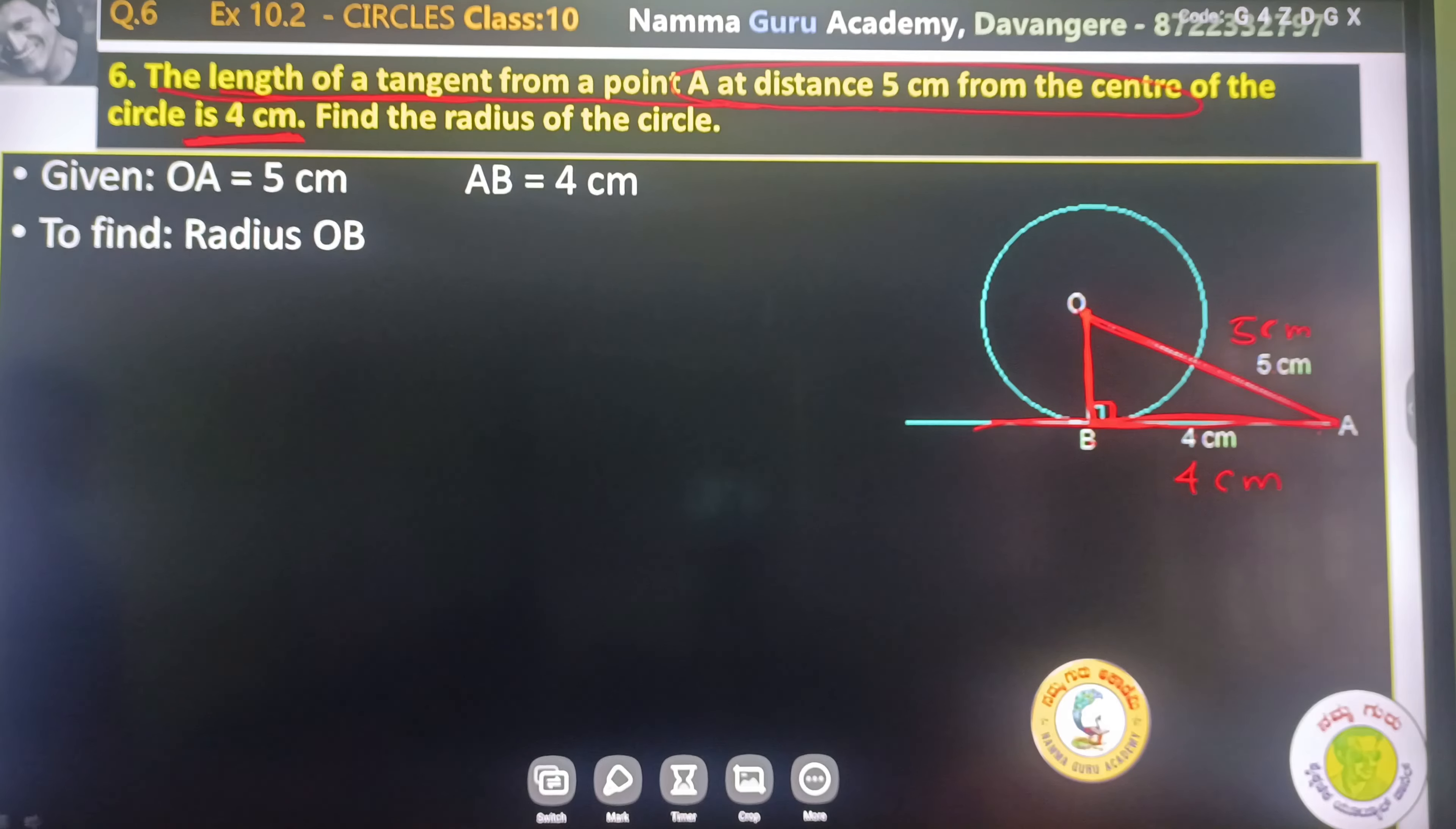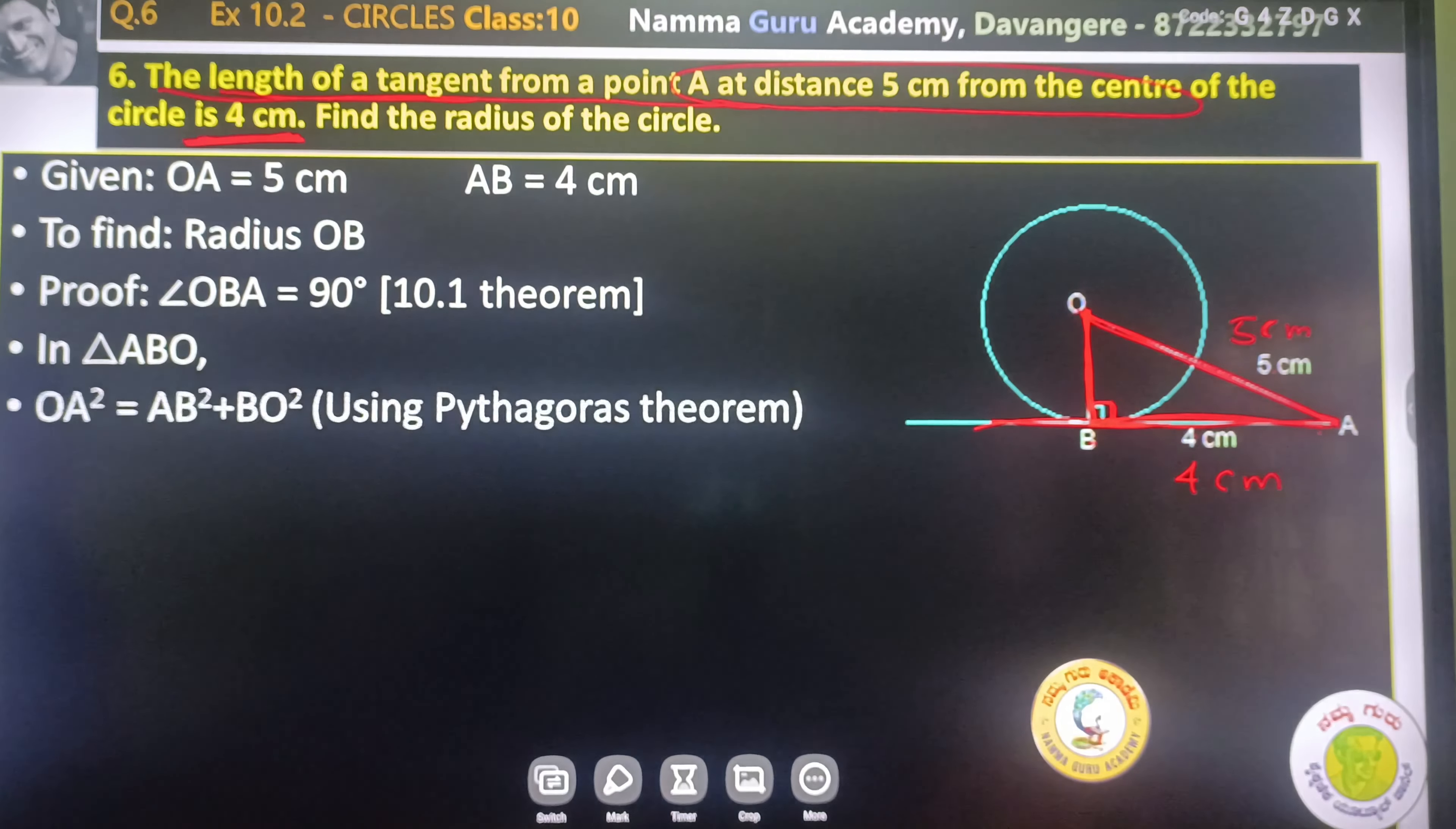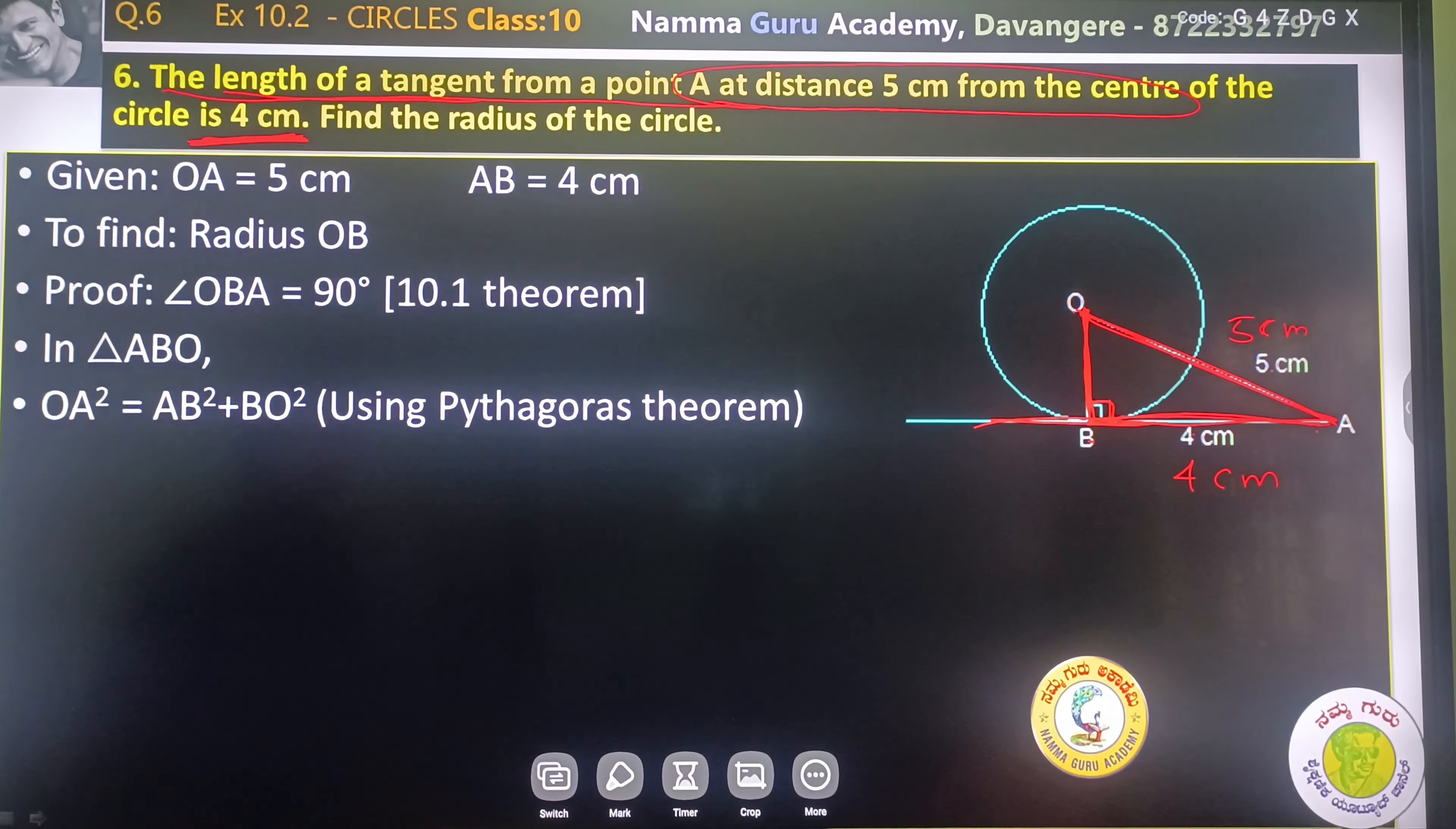Let us find the radius. To find the radius, angle OBA is 90 degrees by theorem 10.1. In triangle ABO, we can use the Pythagorean theorem.